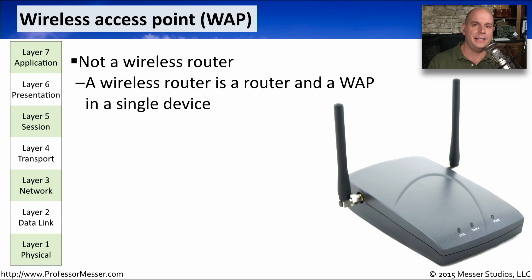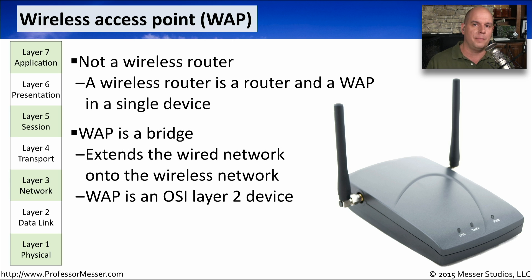Another common network device is a wireless access point, or WAP. If you're working at home, you may be accustomed to a wireless router — it has wireless antennas on the outside, but it also serves as the router inside your network. In those cases, we'd refer to those more appropriately as wireless routers. A WAP is something you'd commonly see in a larger enterprise environment. It is simply a bridge, extending an existing wired Ethernet network into a wireless one. It is an OSI Layer 2 device because it makes its forwarding decisions based on the MAC address, or the data link address inside those frames.